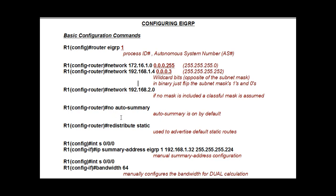Another important command is 'no auto-summary,' which turns off auto summarization. The 'redistribute static' command will advertise default routes or static routes to other routers in the EIGRP autonomous system. This is useful if you want to have a default route — a 0.0.0.0 network with a 0.0.0.0 subnet mask — and send that static route out so other EIGRP routers can learn about it.